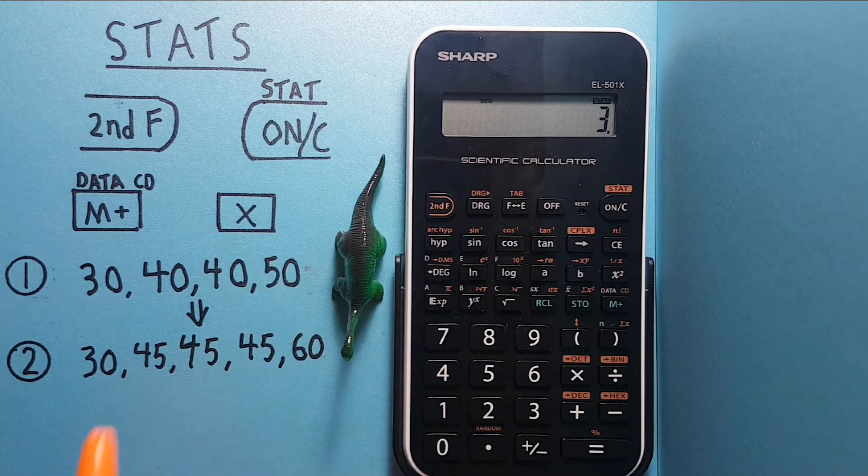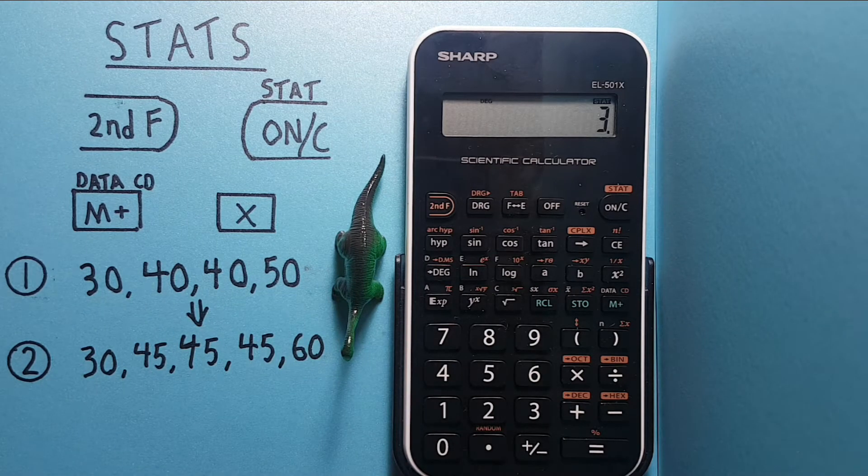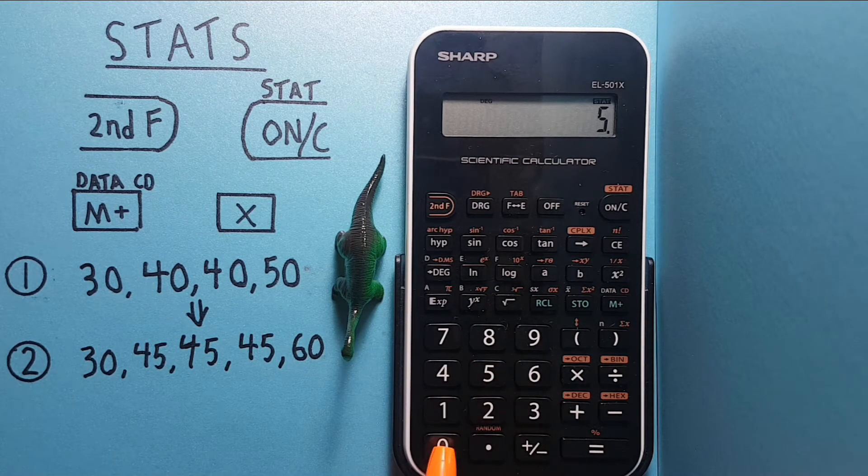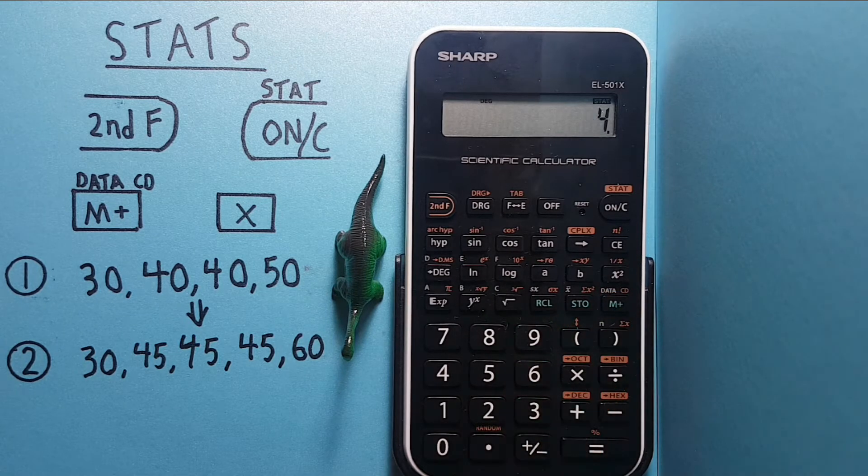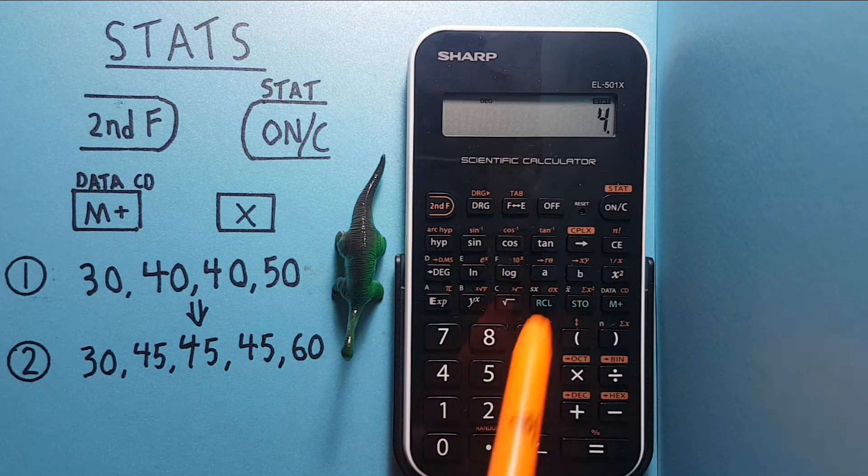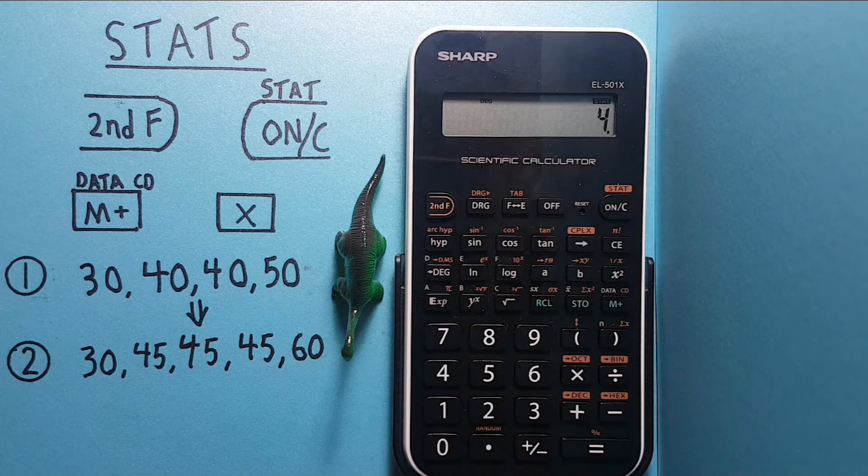You can now see we have three items in our data set. And our final number is 50. So again, we press 50, M plus. You can now see we have four numbers in our data set.